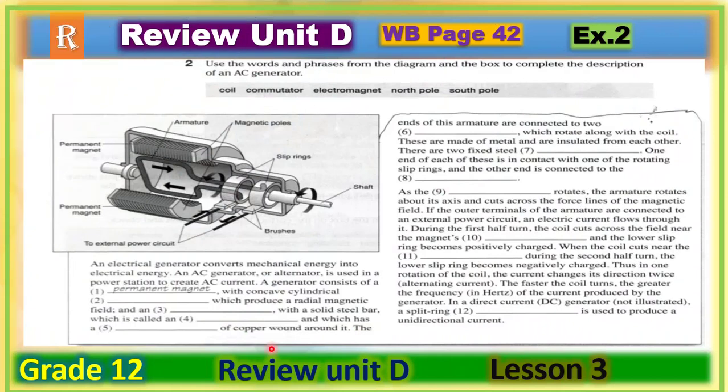Now please open your workbook page 42, exercise 2. In this exercise you have to use the words and phrases from the diagram and the box to complete the description of an EC generator. Be careful, because you are not using only the words from the box here, but also you can use the words from the diagram here. You have 10 minutes to complete the exercise and when you finish, please play the video again to check your answers.